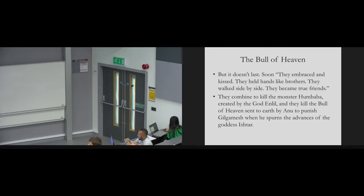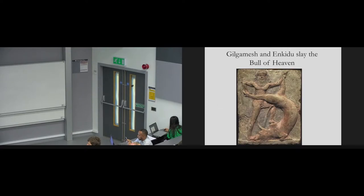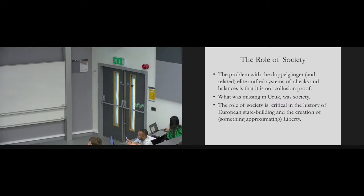What does Anu do? Anu sends a doppelganger to earth called Enkidu, an identikit version of Gilgamesh, to check him and balance him. It sounds a bit eccentric, but if you think ethnographically, there's many types of societies where balanced opposition had the effect of controlling power. Enkidu comes to earth. Gilgamesh is about to ravish some bride. Enkidu blocks the doorway. Problem solved. Not quite. Soon, they embraced like brothers. They kissed. They walked side by side. In the language of economic theory, this particular system of checks and balances wasn't collusion proof.